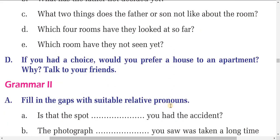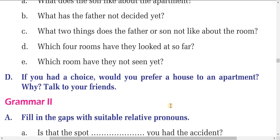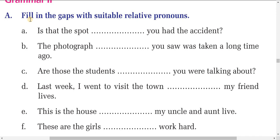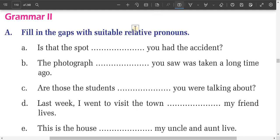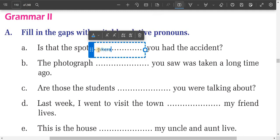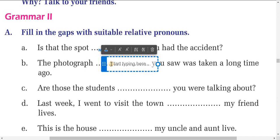Now let's do the grammar section: fill in the blanks with suitable relative pronouns — who, which, and where. With a place, we use 'where.' With things or objects, we use 'which' or 'that.' With people, we use 'who.' For example: the sport — you write 'where.' The photograph — you write 'which' because it is a thing.